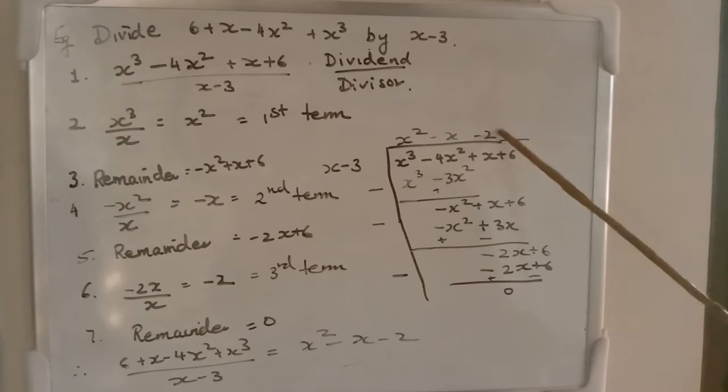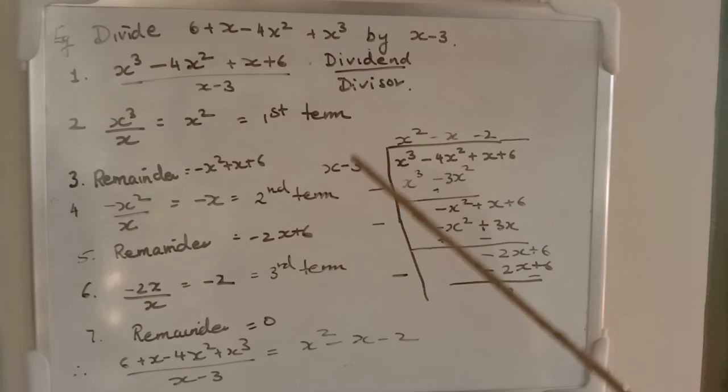After getting that, we multiply into the divisor. So, -2 into x, -2x. -2 into -3, plus 6. Now, we subtract. The signs will change. What will we get as the remainder? 0.